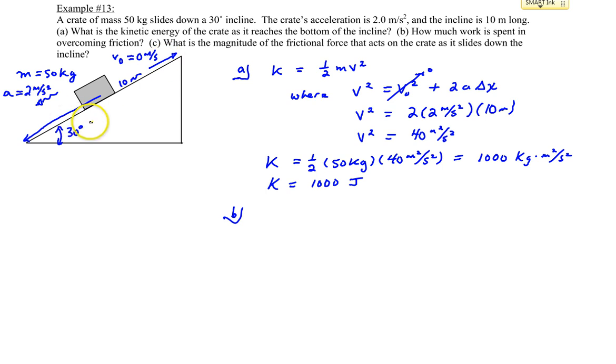As the block slides down the ramp, the total energy of the crate is not constant. It actually loses some energy. It dissipates its energy due to the friction in the surface here. So work is done by friction, and that energy is eventually turned to other forms, most likely thermal energy.